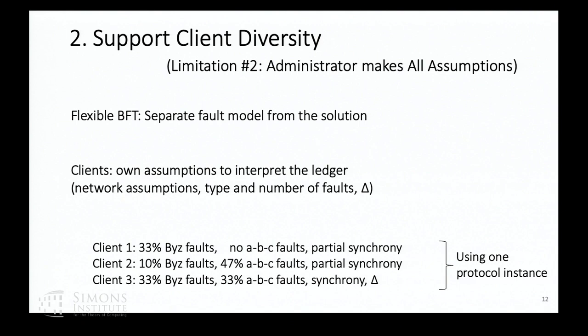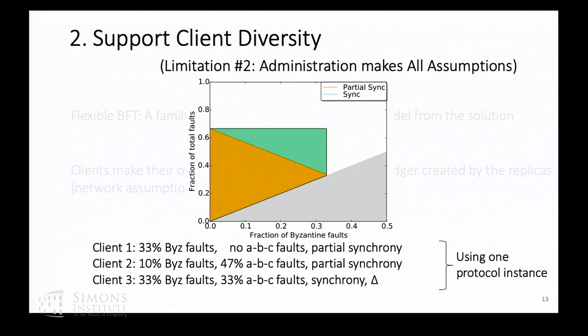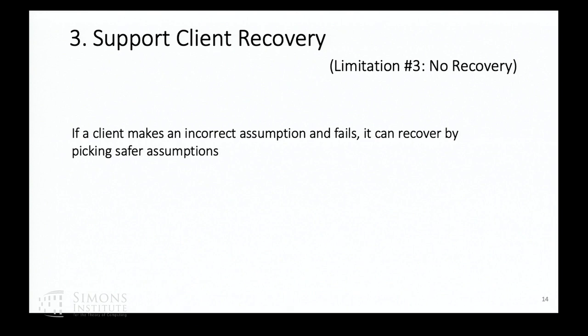These numbers are not arbitrary — there are some restrictions clients need to follow. For one parameterization, on the x-axis you have the fraction of Byzantine faults you can tolerate, and on the y-axis the fraction of total faults — Byzantine plus ABC — that you can tolerate. One point on this graph refers to one client belief. The orange region represents clients we can support in a partially synchronous network; the green region represents clients we can support in a synchronous network. If clients make incorrect assumptions and fail, we give guidance on how to recover by picking safer assumptions in the future.